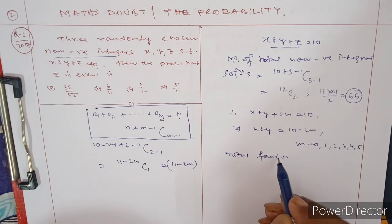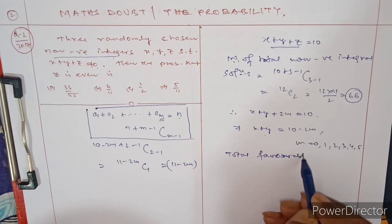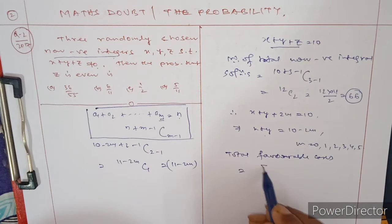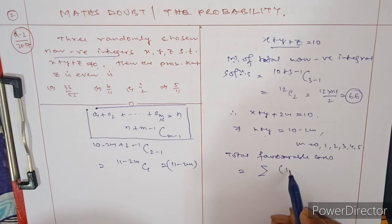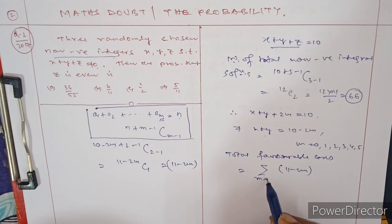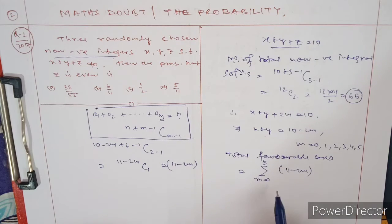That is summation of 11 - 2m where m ranges from 0 to 5. From 0 to 5 is 6 terms, so this gives 11 × 6.